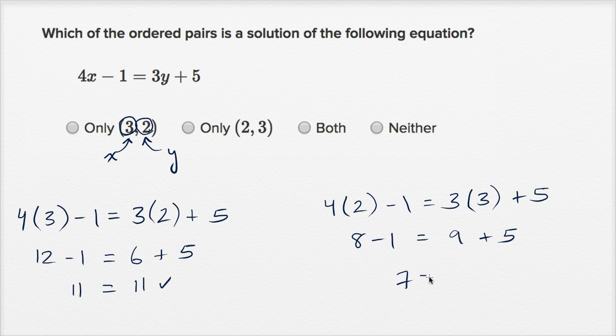So is 7 equal to 14? No, clearly 7 is not equal to 14. So these things are not equal to each other. This is not a solution. When x equals 2, y cannot be equal to 3 and satisfy this equation. So only (3,2) is a solution.